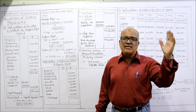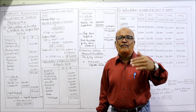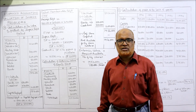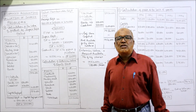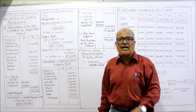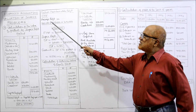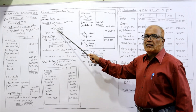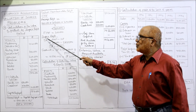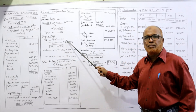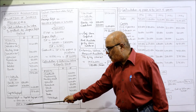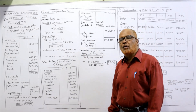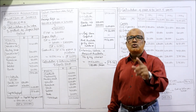FMP (future maintainable profit) means past average profit adjusted for future changes. Since no changes are given in this problem, we simply take the past average profit as the FMP. The last three years' profits — 2 lakh 60 thousand, 3 lakh 50 thousand, and 2 lakh 90 thousand — add up and divide by 3, giving FMP = 3 lakh. Super profit = FMP − NP = 3 lakh − 2,83,500 = ₹16,500.